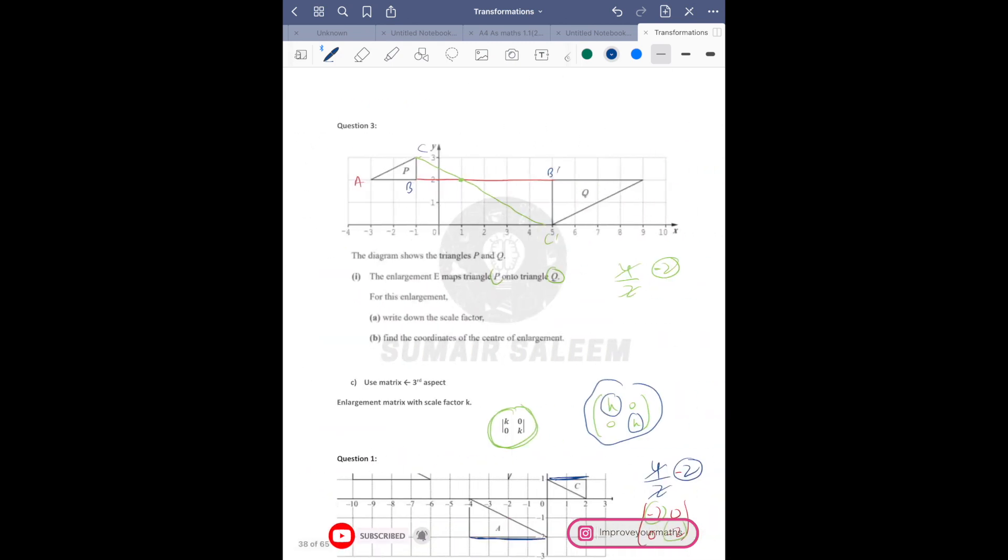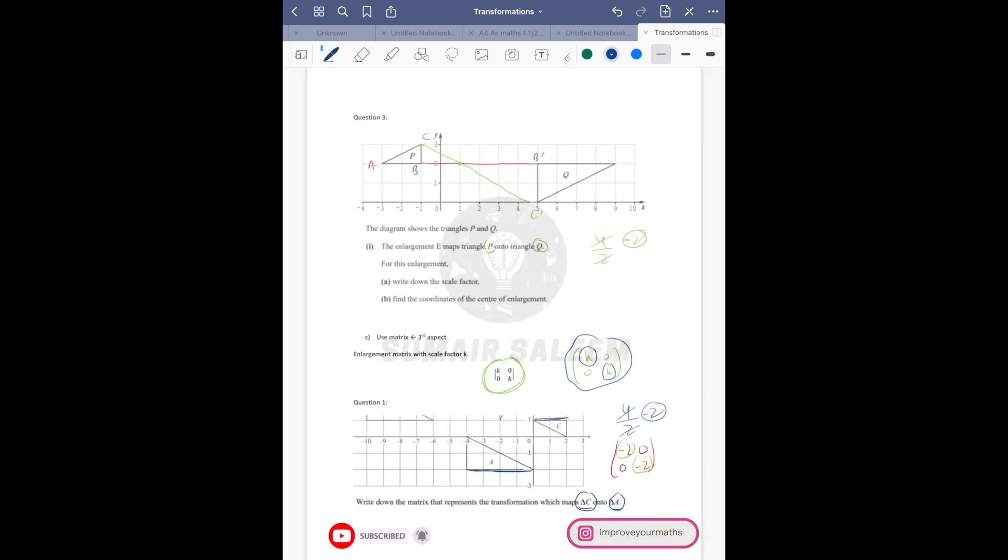Once you get this, you should know how to find scale factor. Listen very carefully. The matrix of enlargement - and if the diagram is in opposite direction, the scale factor becomes negative. I'll start with this.